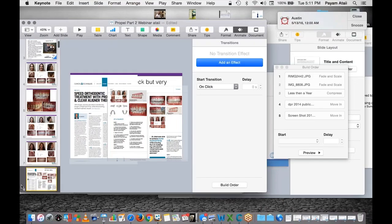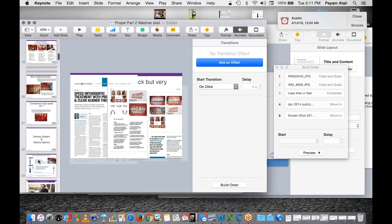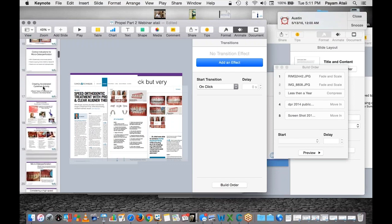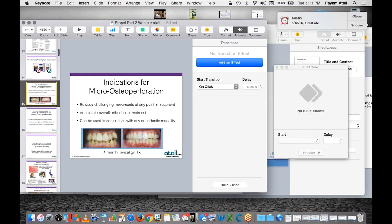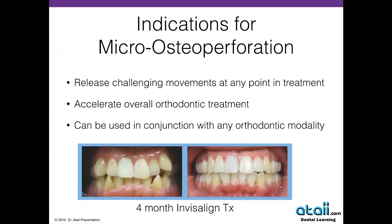Whether you use wire and brackets or Invisalign or clear aligners, you can use MOPS in these cases. In less than four months I was able to finish this particular patient — we created the inflammatory process. The main agenda was tooth number eight that needed to be restored, but I wanted to put that tooth in a better bite. The patient was being deployed and had minimal time, couldn't have wire and brackets, so we did the clear aligners with perforations and sped up tray changes from every two weeks to much faster.